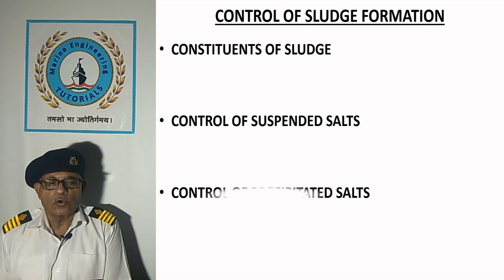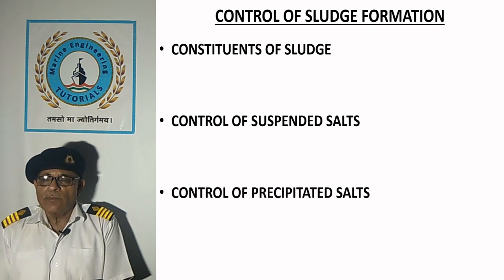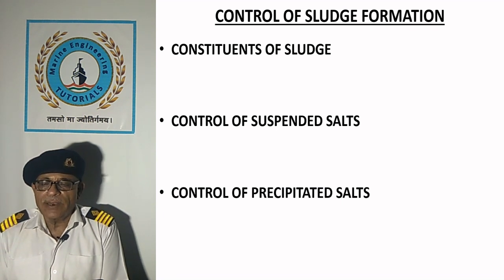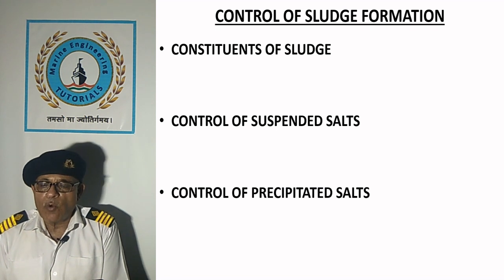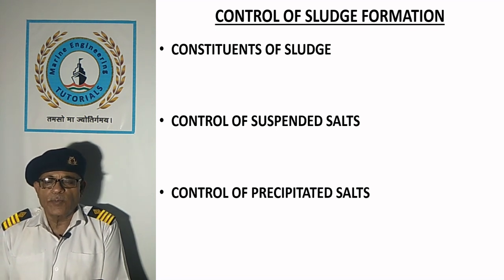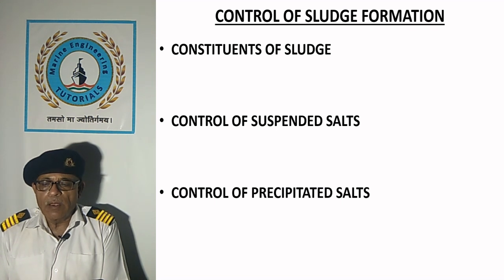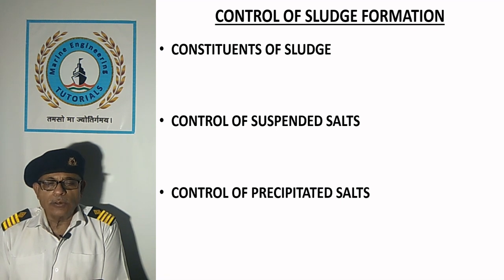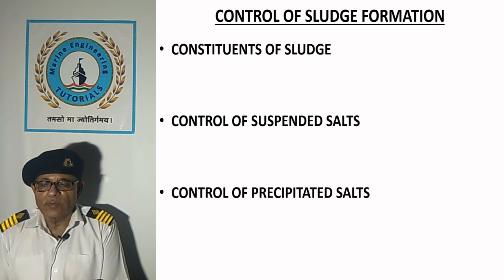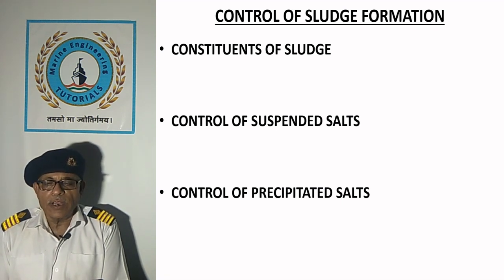Control of precipitated salts: calcium carbonate, magnesium hydroxide and calcium sulphate are not soluble in boiler water and tend to deposit scale. Calcium and magnesium phosphates produced by chemical reactions are precipitated. All these salts must be removed from the boiler by periodic blowdown to prevent their accumulation and subsequent deposition.